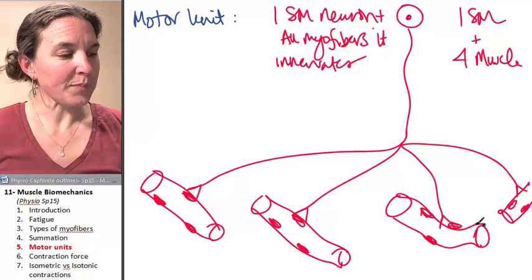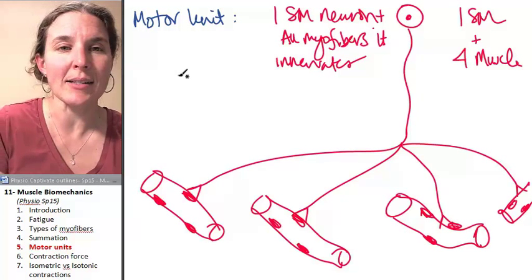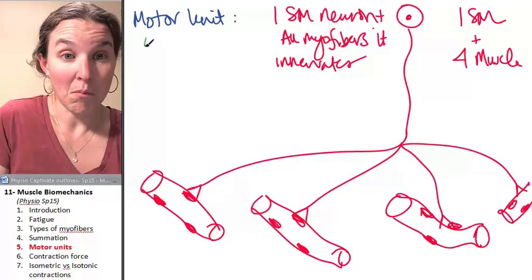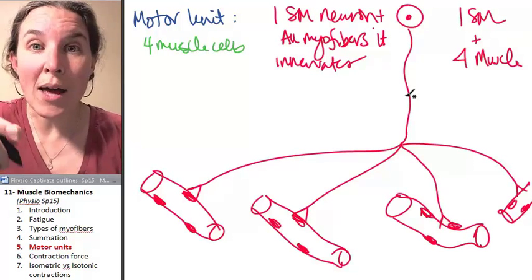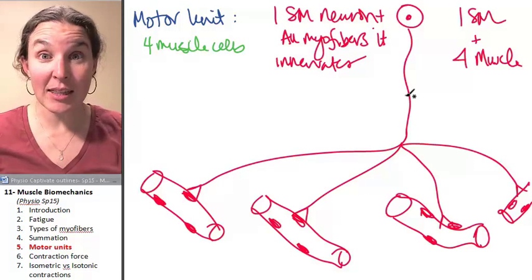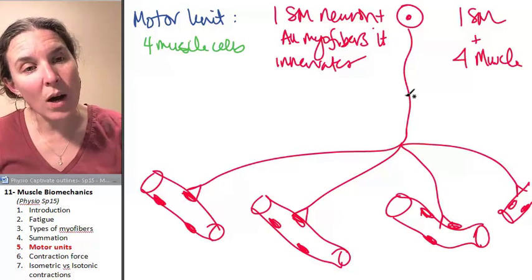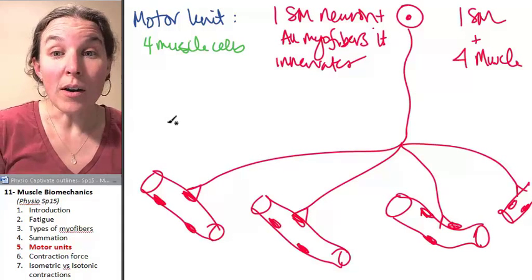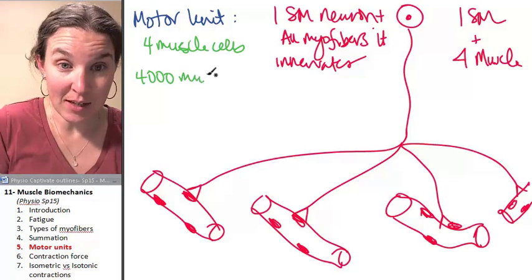And here's the deal. Myofibers, they range in size. They can be four muscle cells. So one message from a neuron is going to stimulate the contraction of four muscle cells. And that's one motor unit. Or they could be 4,000 muscle cells.